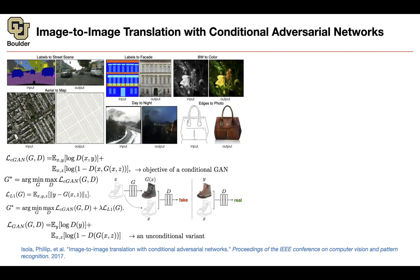Why is Z removed here? Whenever you have an input, Z could be your dropout noise — your dropout variables can act as Z. So there is no need to put Z as an explicit input; dropout gives you the randomness you need. You take X, push it through G to get G of X, then take G of X and X together and push them through your discriminator, because the discriminator depends on X as well. The discriminator discriminates between fake and real — Y is the real data, G(X) is the generated data.